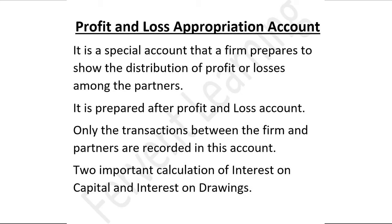Is mein hum log sirf firm aur partners related transactions ko hi record kar sakte hain, aur ye Profit and Loss ke baad hi prepare kiya ja sakta hai, because it is important to know the profit and loss of the business before the distribution among the partners. Business and business-related transactions jo hain, unhe jis account mein record karte hain aur partners ki profit and loss calculate karte hain, use hum log kehte hain Profit and Loss Appropriation Account.